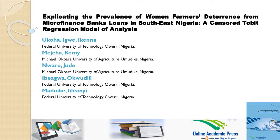Explicating the Prevalence of Women Farmers' Deterrence from Microfinance Banks Loans in Southeast Nigeria: A Censored Tobit Regression Model of Analysis.